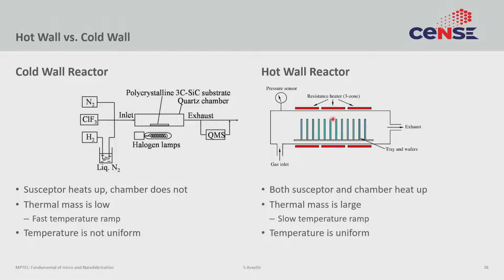The difference between a cold wall and a hot wall lies in the quartz chamber. In the cold wall system, the quartz chamber is heated by a halogen lamp. The halogen lamp emits in the visible region, and quartz is transparent to visible light. So the radiation from the lamps passes through the quartz chamber without heating it and directly heats the polycrystalline wafer. Some heat may transfer from the substrate to the chamber, but primarily the chamber is not heated on its own.